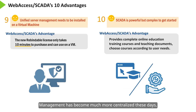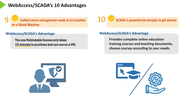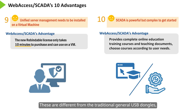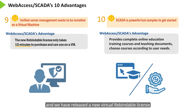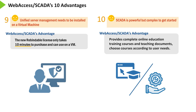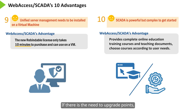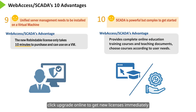Management has become much more centralized these days, and some sites have SCADA installed on unified servers. Different from traditional USB dongles, we have released a new virtual repeatable license. It takes only about 10 minutes from purchase to activation of the system online, and SCADA can start operating on virtual hosts right away. If there is a need to upgrade or purchase additional functions, click upgrade online to get a new license immediately.